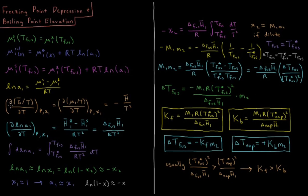At this point we bring in the Gibbs-Helmholtz equation, which states that the partial derivative of the molar Gibbs energy divided by temperature, with respect to temperature at constant pressure and constant mole fraction of component 1 (our solvent), is equal to the partial derivative of the chemical potential of the solvent over temperature with respect to temperature at constant pressure and mole fraction. That equals the negative molar enthalpy of the solvent divided by temperature squared.